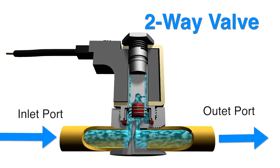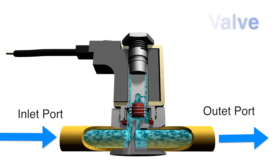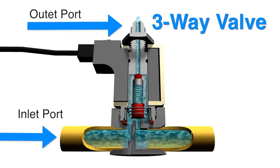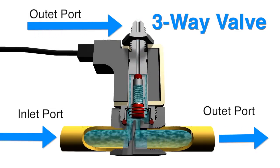Two-way valves have an inlet and outlet port and a single orifice, while three-way valves feature three port connections and two valve orifices to control flow.